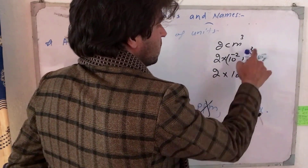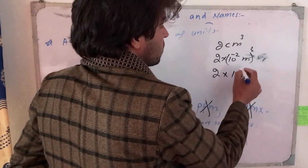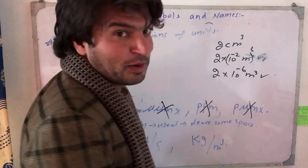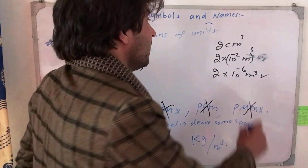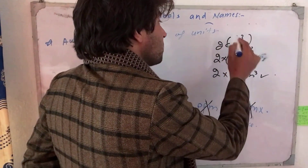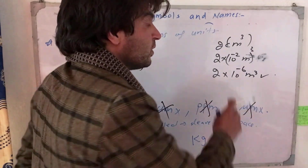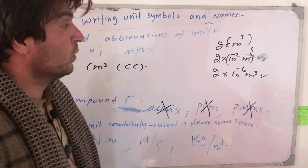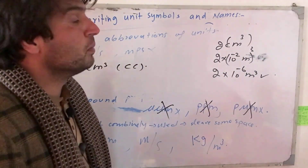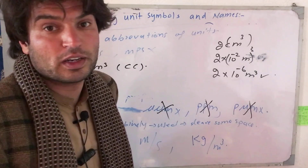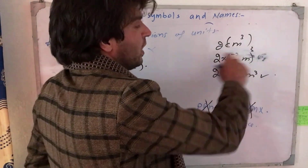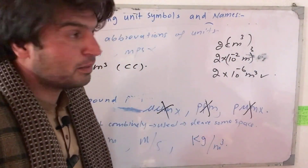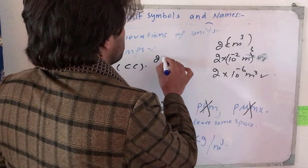The whole cube: 2 multiplied by 10 to the power of minus 2, cubed — that is 2 multiplied by 10 to the power of minus 6 meter cubed. So 2 centimeter cubed equals 2 times 10 to the power of minus 6 meter cubed.